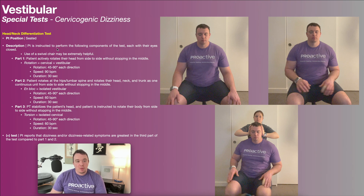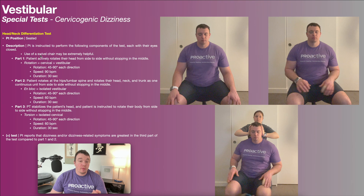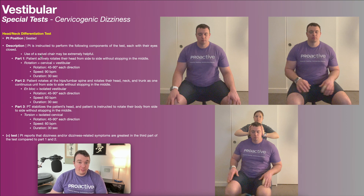The patient is instructed to perform the following components of the test — there are three parts to it, each with their eyes closed. One key point: when this test was originally described in the literature, which I'll link in the description, it is done with the eyes closed. Particularly for two of these parts, it's very helpful to have a swivel chair because the patient's body is going to rotate at a fairly quick rate, and a regular chair makes it very difficult, if not impossible, to assess validly.